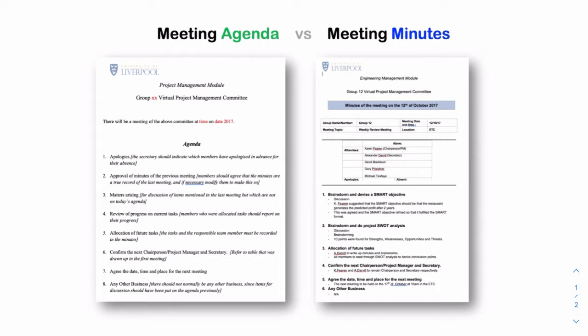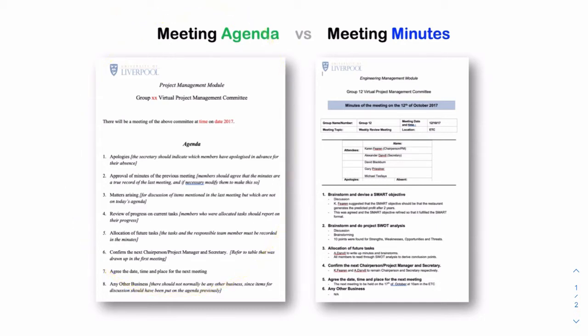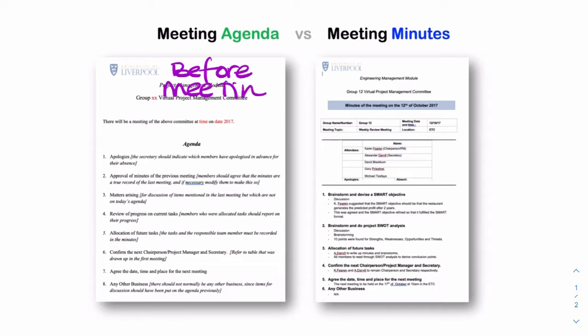An agenda is a document which is prepared before a meeting. This is prepared before the meeting. And it's what you refer to during the meeting. Before the meeting, the secretary prepares the agenda.